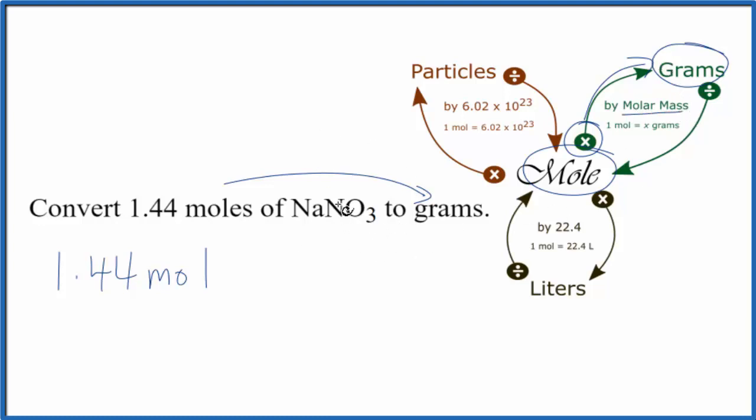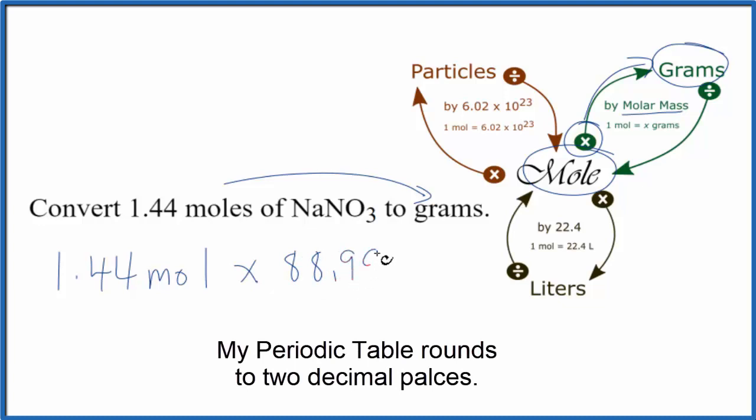We go to the periodic table and look up the atomic mass for each one of these elements. We multiply, add everything together, and we'll get 88.99 grams per mole for the molar mass for NaNO3.